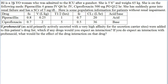So this patient is a 38-year-old man. She's on these medications: piperacillin and ciprofloxacin. And if she's dosed again with probenecid, which is an acid primarily and actively secreted with a very high affinity for the secretion carrier sites — what will happen? What will be the effect? Which drug concentration will increase or decrease? Which drug's clearance will increase or decrease?